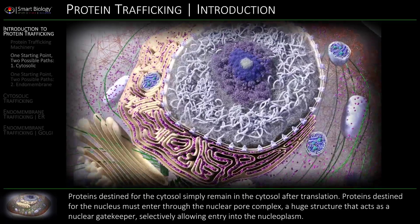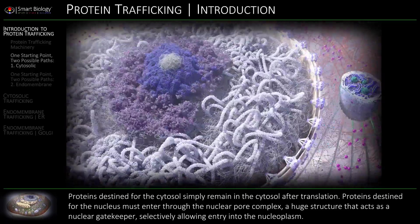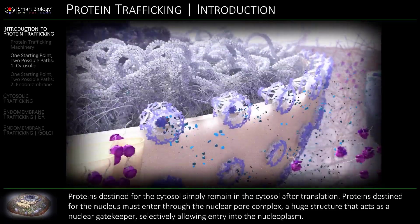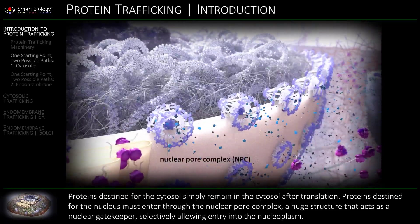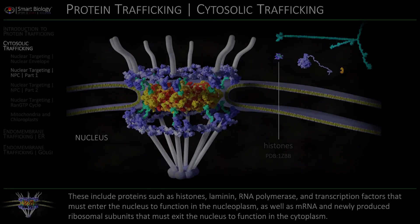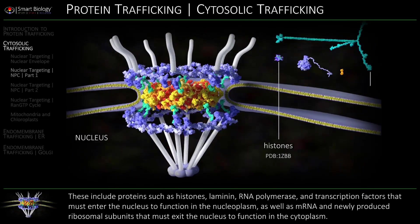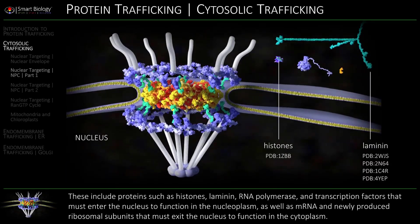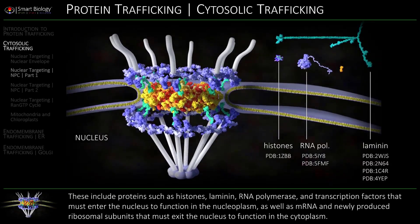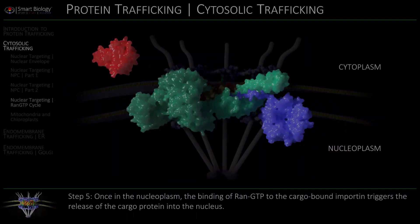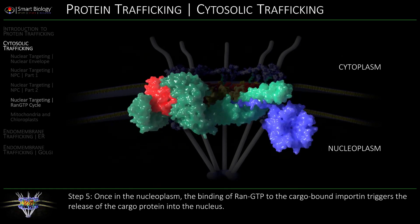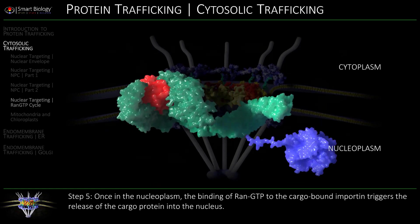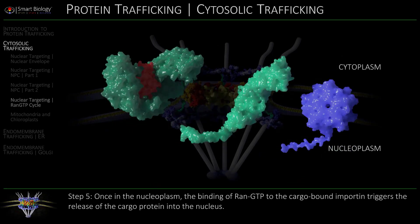Proteins destined for the nucleus must enter through the nuclear pore complex. Histones, laminin, RNA polymerase triggers the release of the cargo protein into the nucleus.